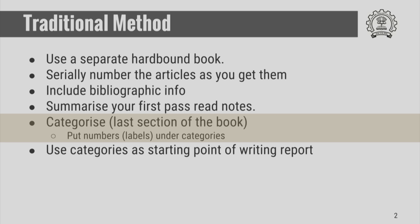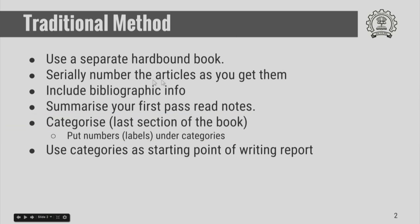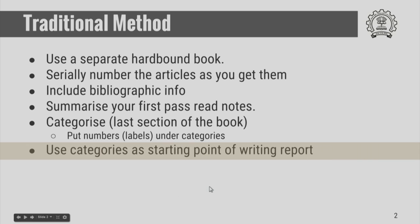In the last section of the book, you have various topics and sub-topics. Under each sub-topic, you list down the numbers — the same numbers that you have used to number the article in the first place. A particular article may come under various section heads or sub-section heads. This way, you have organized the articles under various categories, and you can use these categories as a starting point of your report.